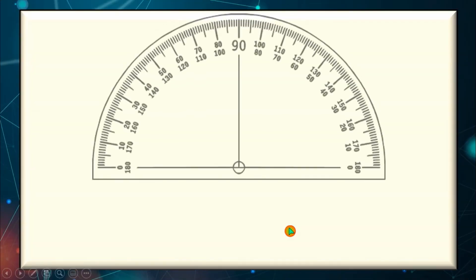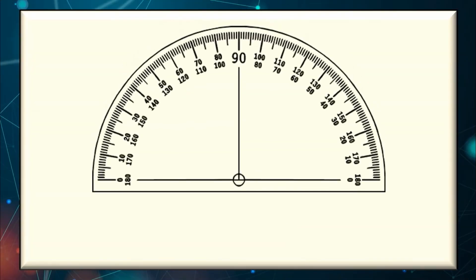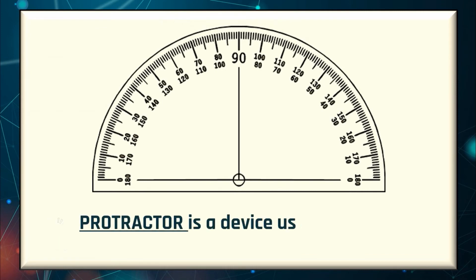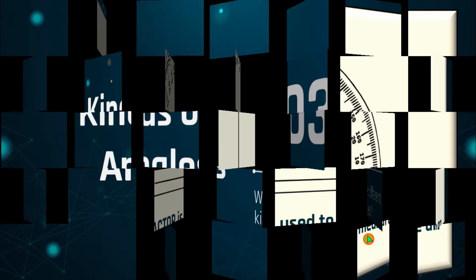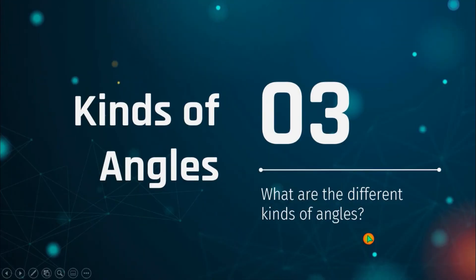Of course, to measure that we have to use a protractor. A protractor is a device used to measure an angle or to draw an angle. Now let's proceed to the different kinds of angles.